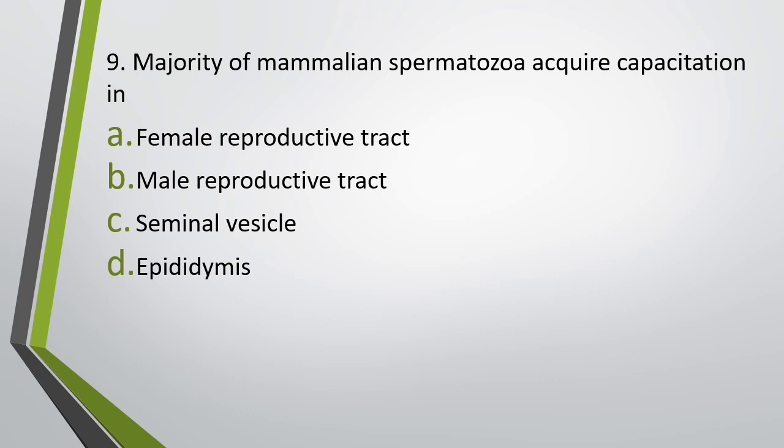Question number nine. Majority of mammalian spermatozoa acquire capacitation in: female reproductive tract, male reproductive tract, seminal vesicle, or epididymis. Correct answer is option A — the female reproductive tract.